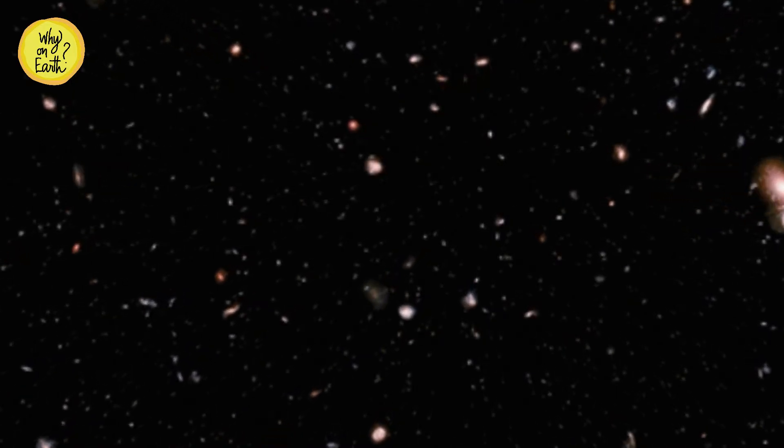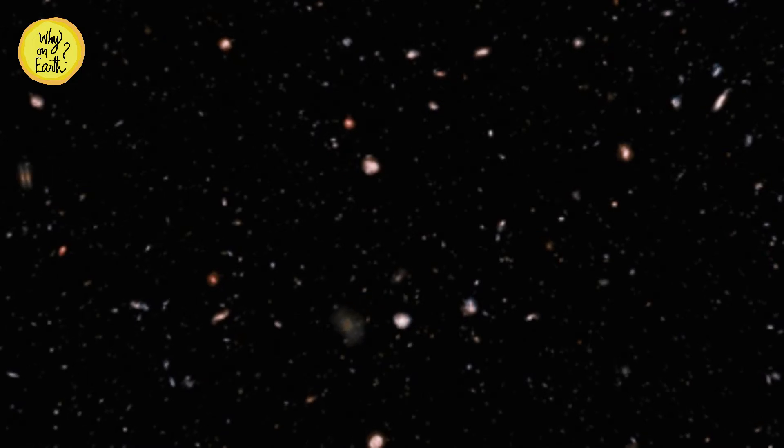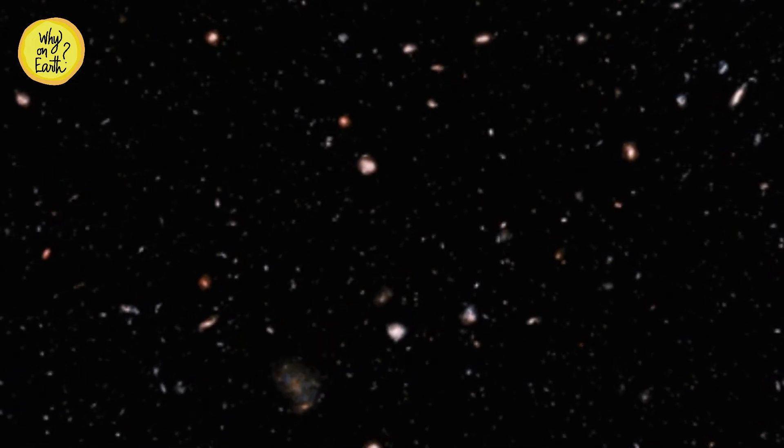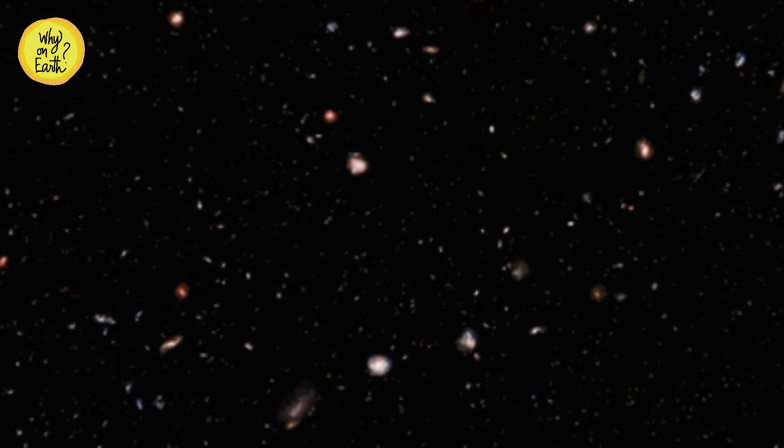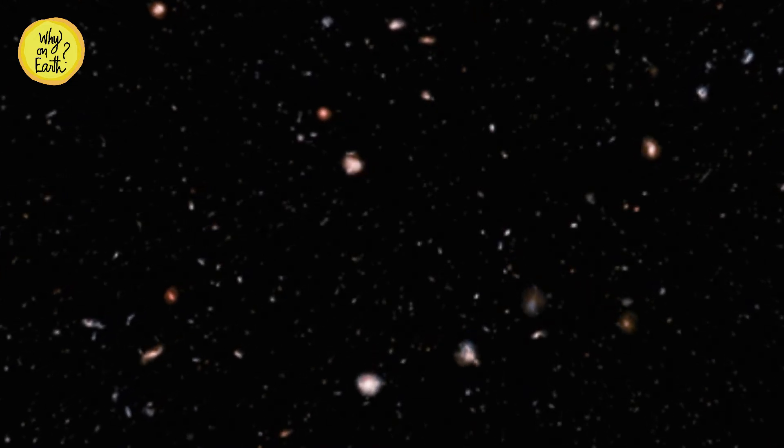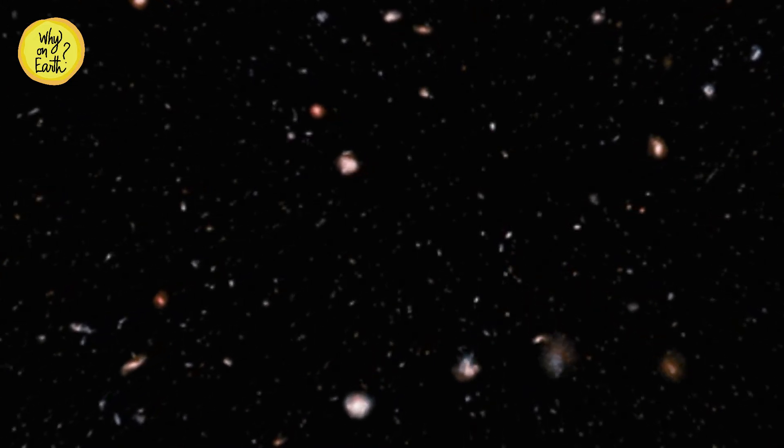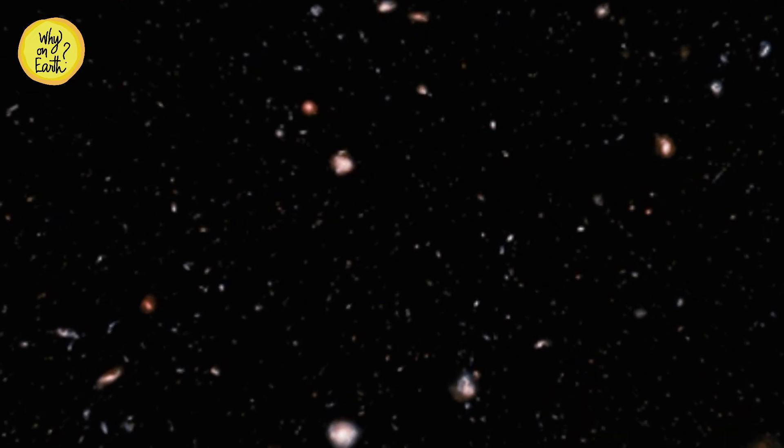Yes, you heard that right. Space scientists can depict the age of these galaxies, or at least tell you which ones are younger or older. Based on that, irregular galaxies come somewhere in the middle. They are younger than elliptical galaxies while older than spiral galaxies.